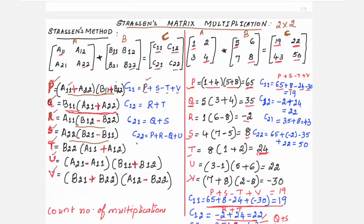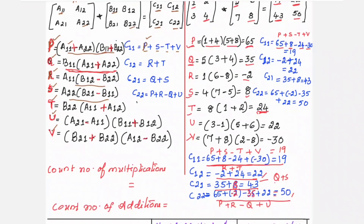You can check the correctness of Strassen's multiplication by taking some other numbers and verifying whether you get the correct value when compared with the traditional method.